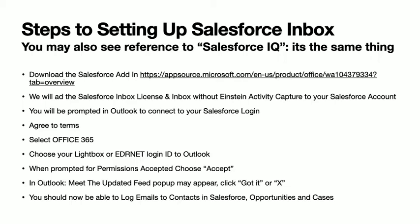If you don't have the add-in, you can use this URL: appsource.microsoft.com/en-us/product/office/wa104379334. There's a whole bunch of additional parameters in there, but you can probably click this link in the presentation. If not, you can search Google for 'Salesforce add-in' and you should find it as well.